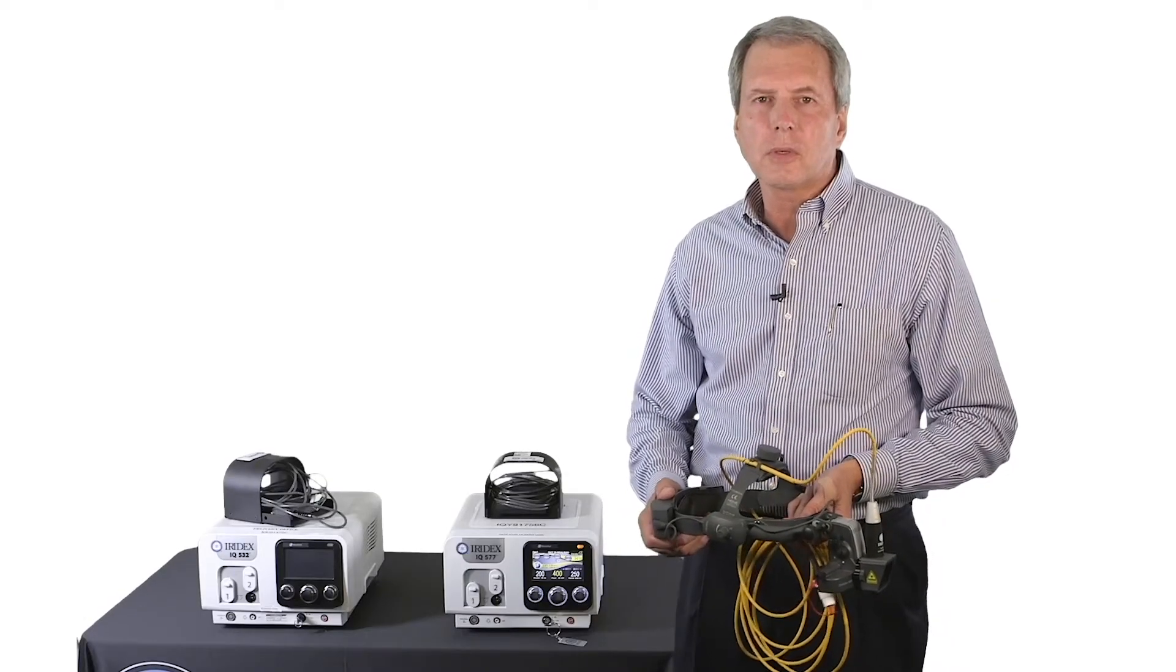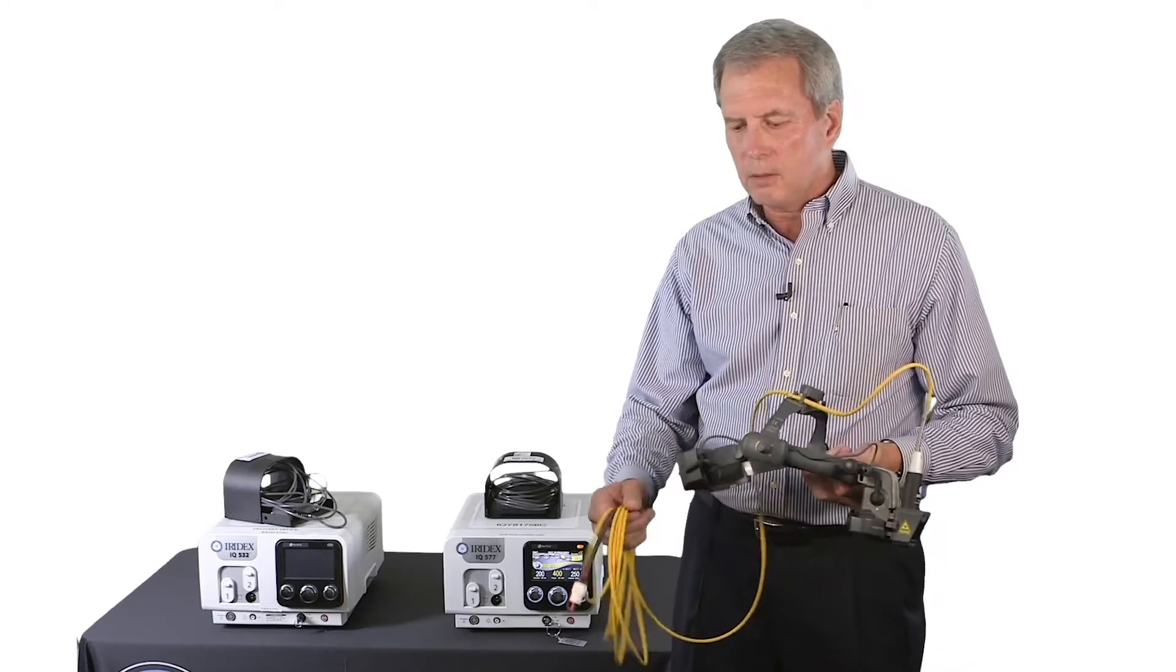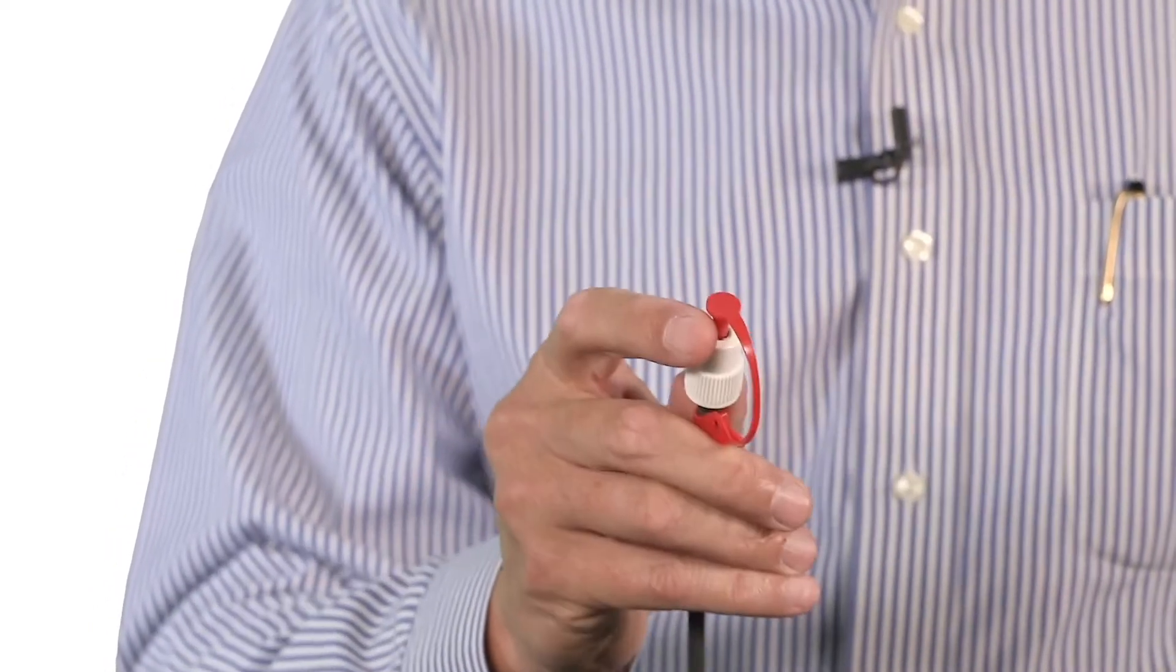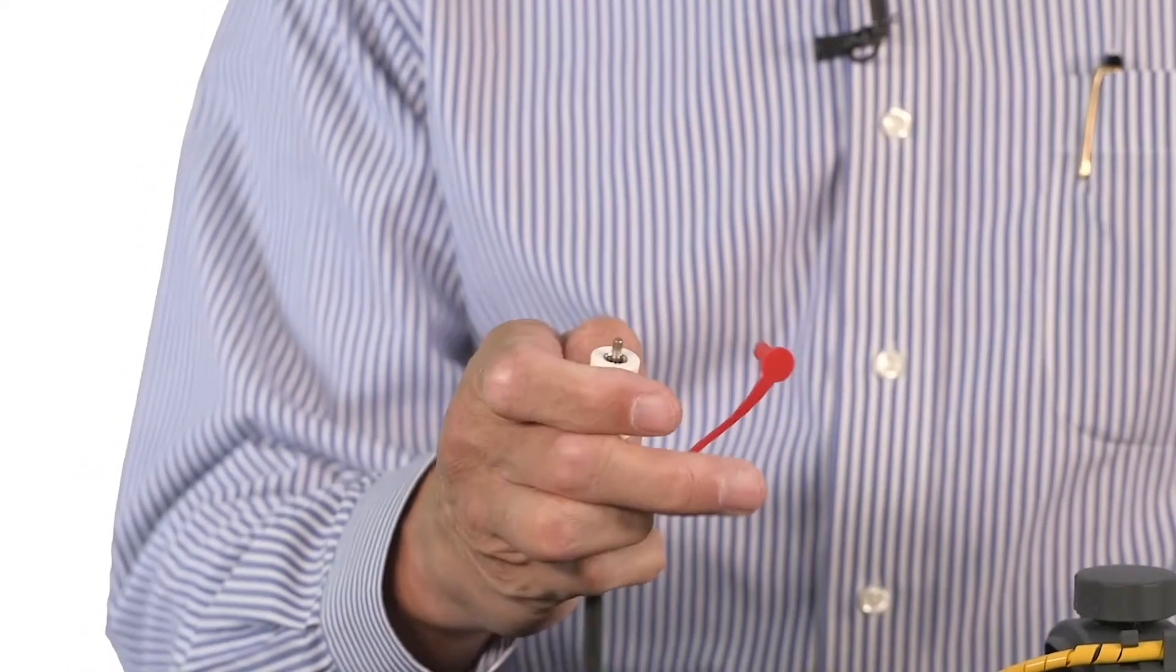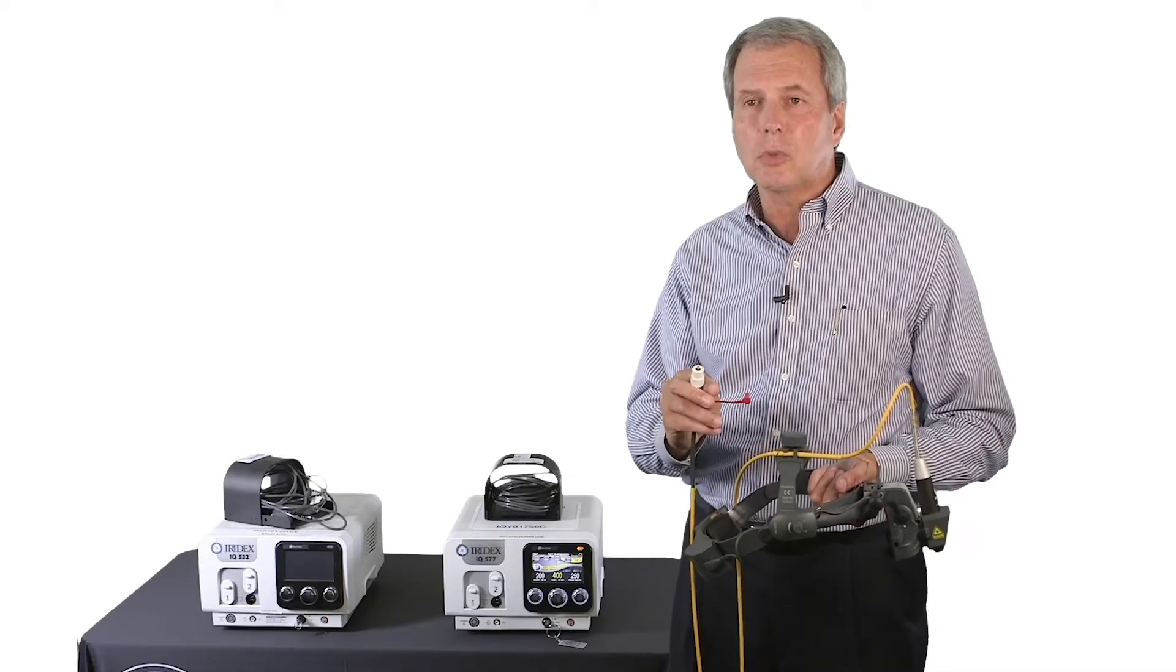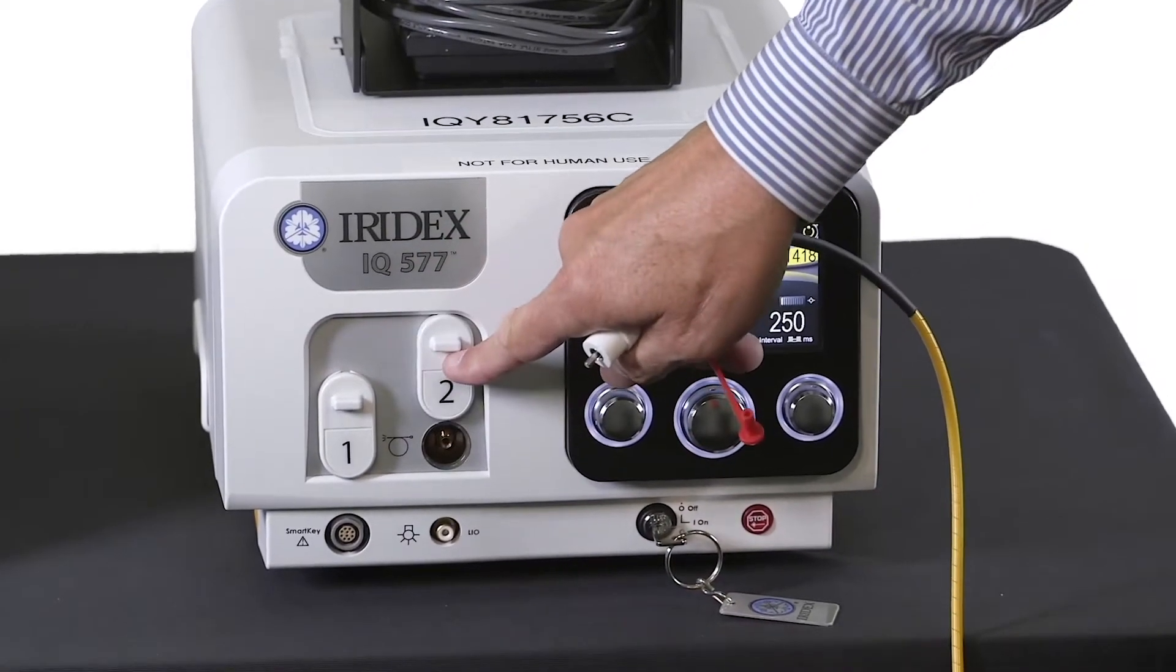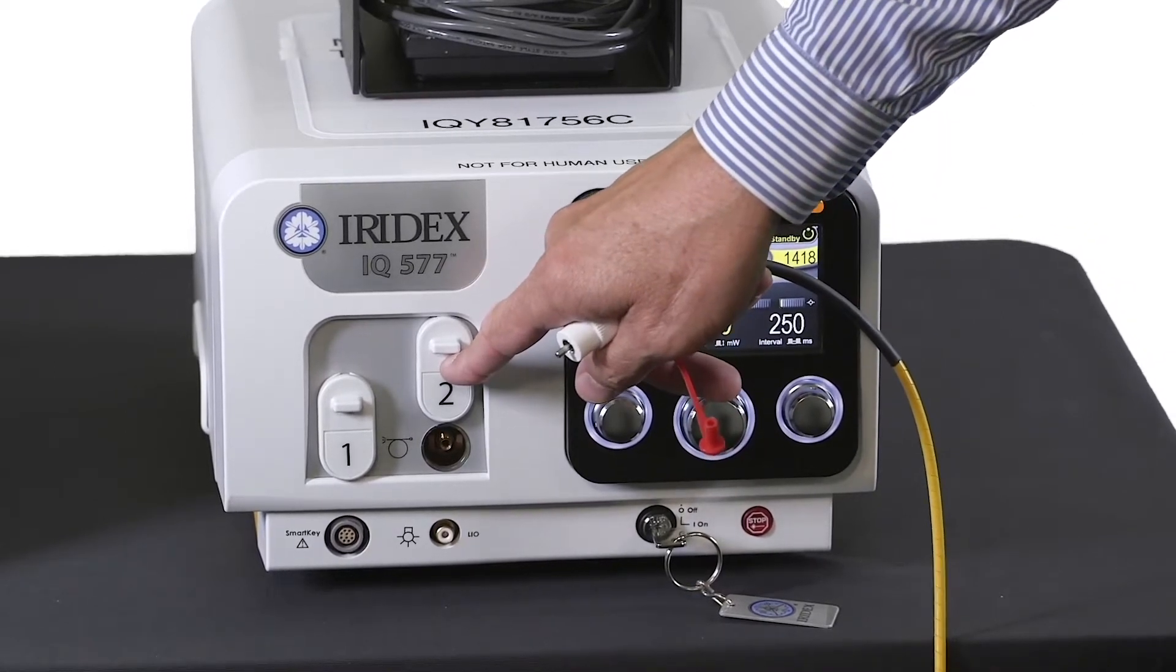In connecting your Iridex TrueFocus Laser Indirect Ophthalmoscope, you have a single fiber with a white RFID connector. The fiber should have the red protective cap on the end. Before you connect to the laser, you want to remove the dust cap and attach to typically the number two laser port. The laser ports are indicated number one, number two, and typically you'll attach the laser indirect ophthalmoscope to port number two.